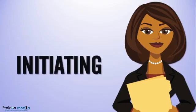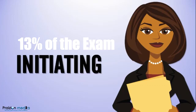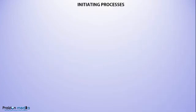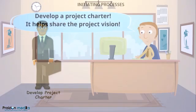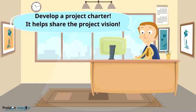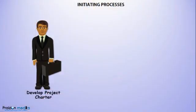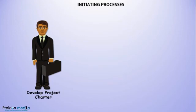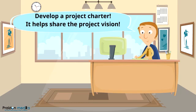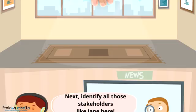The first thing that should happen on any project is the initiating of the project. In the initiating process group, the very first process is Develop Project Charter. This is where the project is authorized. The project charter is an authorization document and is an output of this process. We also begin to document constraints and assumptions at a high level, so the assumption log is also an output of the Develop Project Charter process. Bear in mind that Develop Project Charter could happen at predefined points throughout the project to authorize phases or other segments within the project.